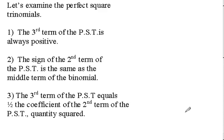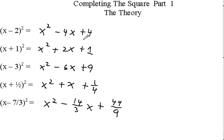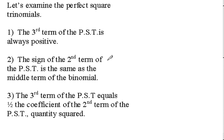Let's examine the perfect square trinomials. The third term of a perfect square trinomial is always positive. Looking at our examples: plus four, plus one, plus nine, plus one-fourth, plus forty-nine-ninths — it doesn't matter whether there's a negative or positive in the binomial; the third term always has to be positive. The sign of the second term of the perfect square trinomial is the same as the middle term of the binomial.